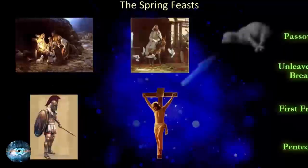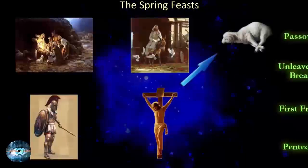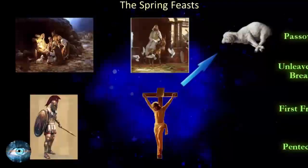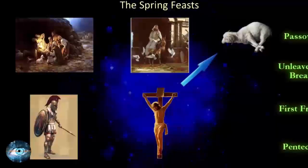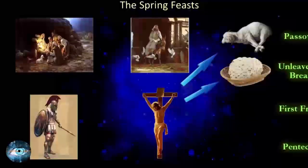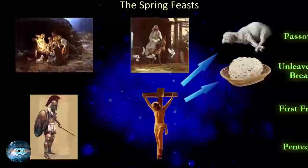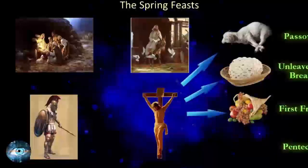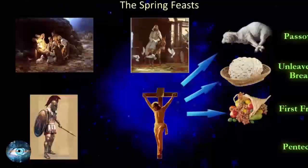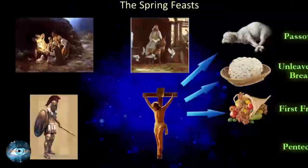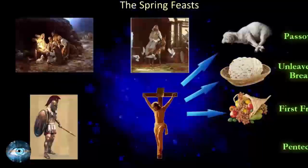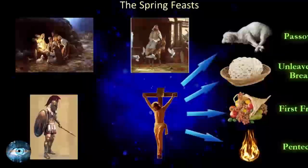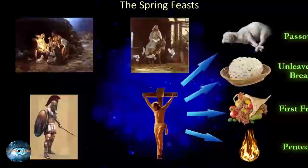Yeshua was God's perfect Passover lamb, whose blood would be shed once and for all for the remission of all sin on the day of Passover, and to bring in everlasting righteousness, as prophesied in Daniel 9:24. Yeshua was the unleavened bread, the only person ever to live on this earth without any sin in his life. He presented himself to God as the first fruits of the harvest of souls that would be resurrected, and have their access to God restored, on the day that Yeshua rose from the dead. Fifty days later, the Holy Spirit was poured out on another appointed day, the day of Pentecost, the beginning of the period of God's church on earth, and issuing in the beginning of the time of the Gentiles.